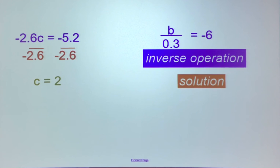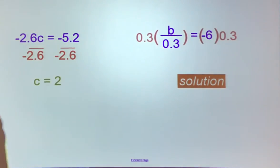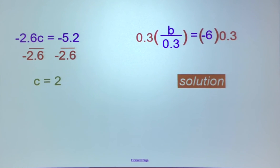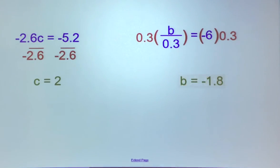On the right-hand side: b divided by 0.3 equals negative 6. The variable is not isolated — they're dividing by 0.3, so we undo that by multiplying both sides by 0.3. On the side with the variable they cancel out, and on the other side, negative 6 times 0.3 — a negative times a positive — gives us b equals negative 1.8.